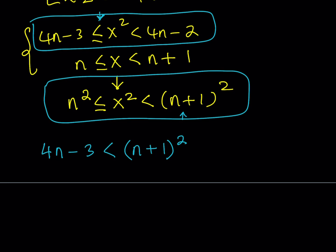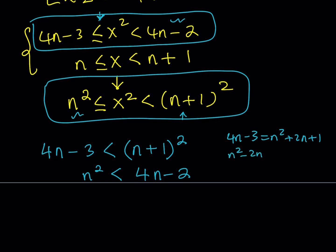The second result comes from combining n squared as a lower bound and 4n minus 2 as an upper bound — so n squared needs to be less than 4n minus 2. Can they be equal? No: for the bottom inequality, there are no integer solutions to that quadratic equation. For the top one, 4n minus 3 equals n squared plus 2n plus 1 gives n squared minus 2n plus 4 equals 0, which has no real solutions either.